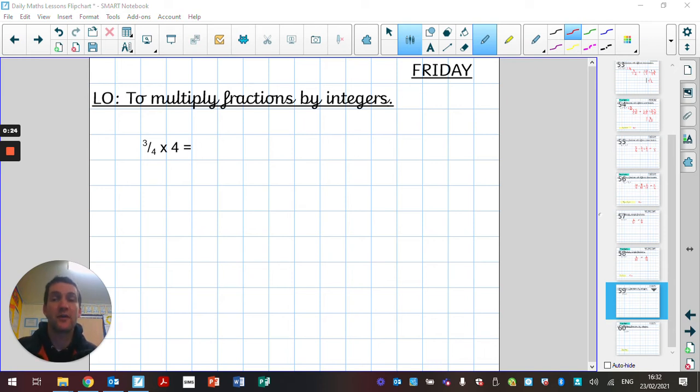So what I'd like you to have a look at is the question which we're going to have a look at first. Three quarters times four. So think to yourself, how were you going to work out that question and then we're going to have a look at it together before you having a go at doing another question.